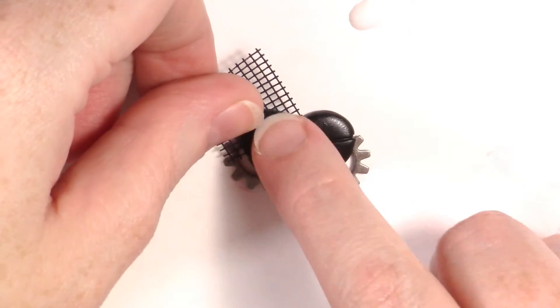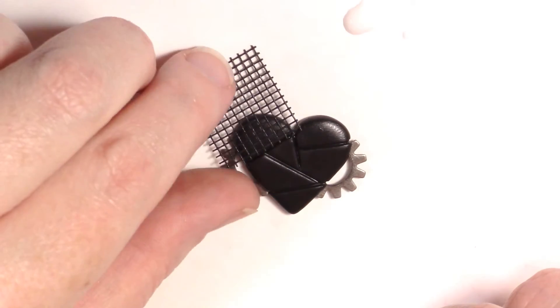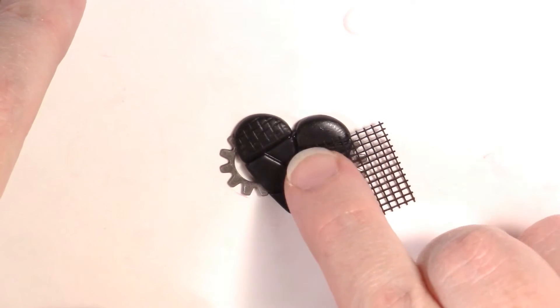Once your lines are finished up, you can add some texture to all the sections or just a few. Take your screen piece and push it down firmly on the clay and repeat for each section.